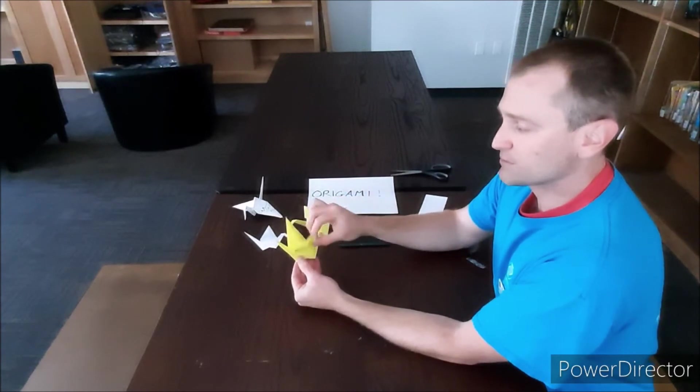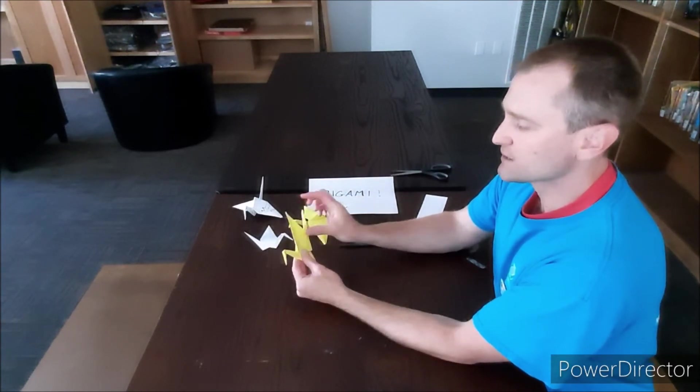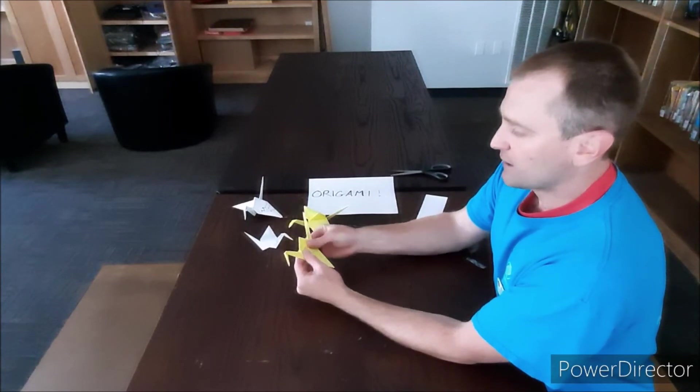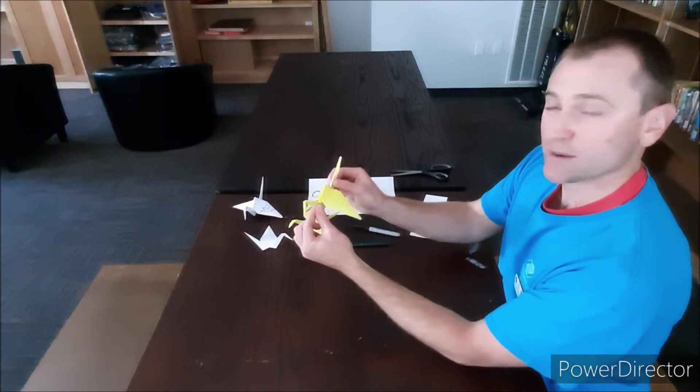The wings are pretty much simple. Just fold down these two wings on either side. And now you have the flappy paper crane.